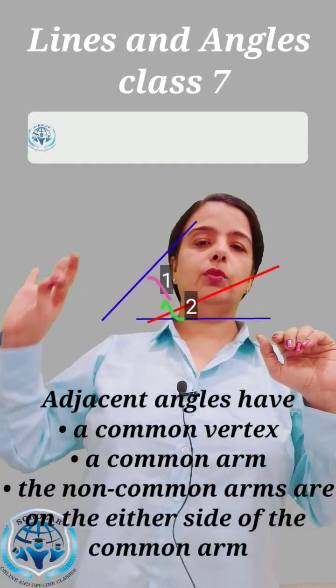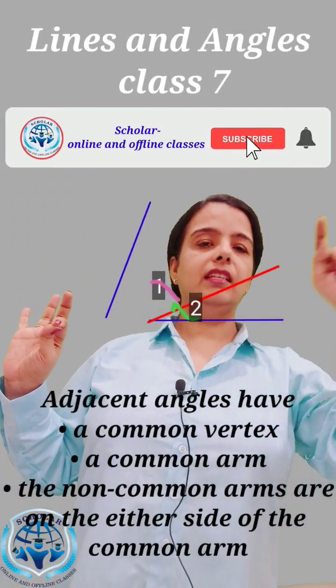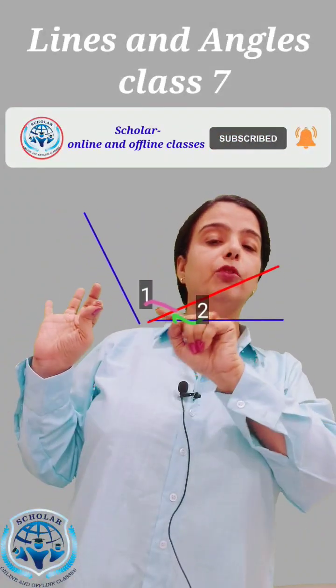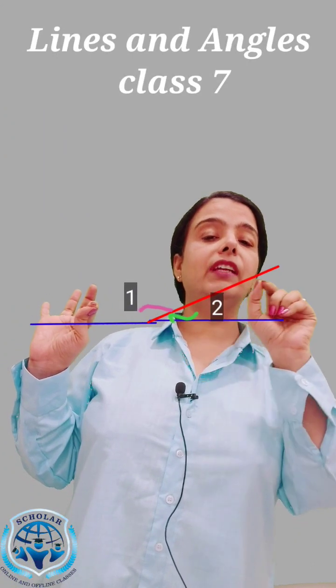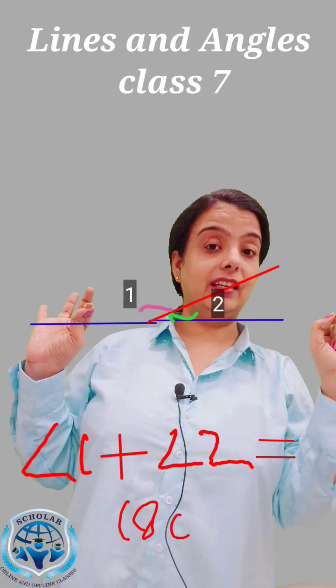If you rotate a line like this, this line is as it is, this angle is this. If you add these two angles, you will get the sum as 180 degrees.